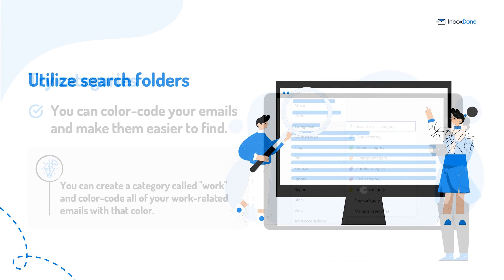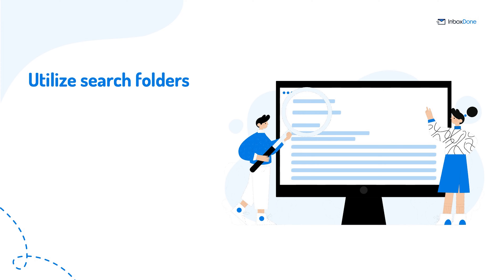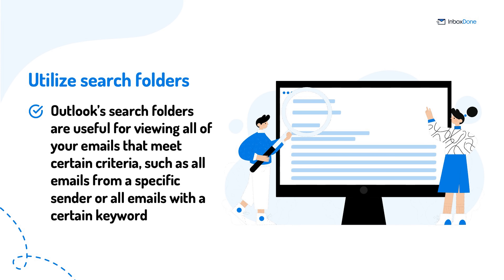Number three: utilize search folders. Outlook search folders are useful for viewing all of your emails that meet certain criteria, such as all emails from a specific sender or all emails with a certain keyword. This is often an effective way to quickly find and identify emails without having to search through your entire inbox.